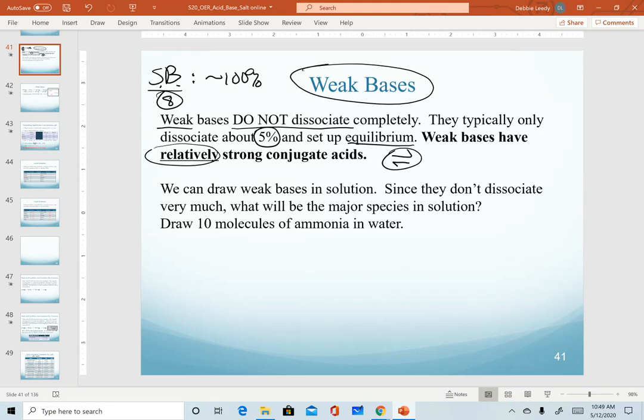Again, these are going to have relatively strong conjugate acids. We are going to start by drawing a weak base in solution, and then on the next slide, we will calculate the pH. We are going to start with drawing 10 molecules of ammonia in water. Ammonia is our classic example of a weak base. It is not the only one, but it's the easiest one to work with, both from a formula standpoint and from availability in a stockroom standpoint.